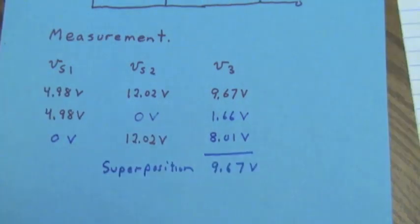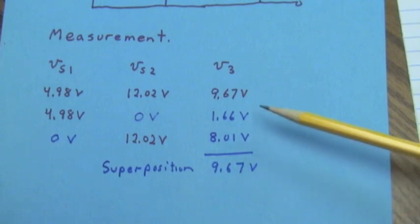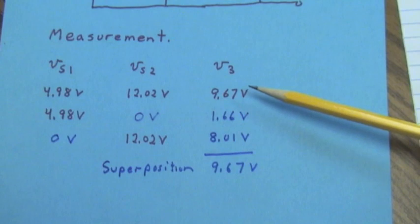And if we add the two individual results, if we apply superposition, we get 9.67 volts, the same thing as we obtained when both of them were acting together.